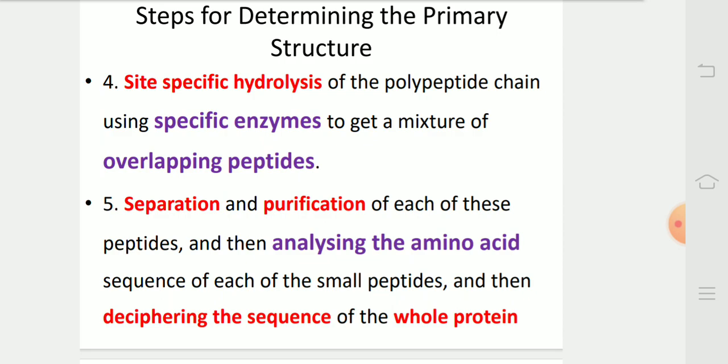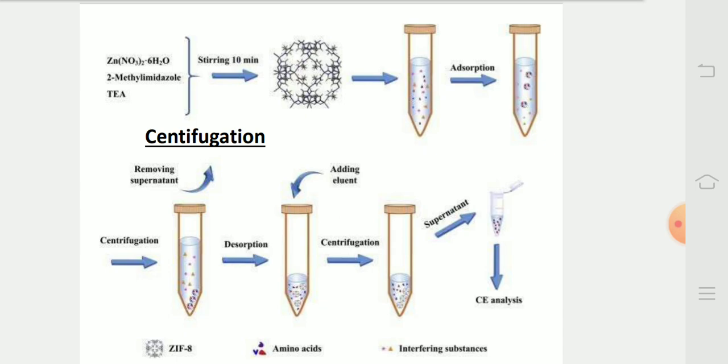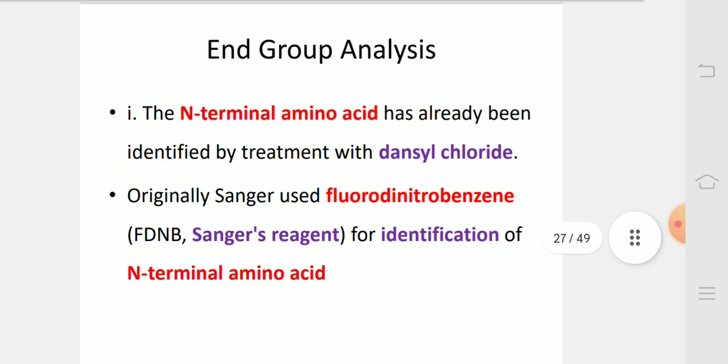Site-specific hydrolysis of polypeptide chain using specific enzymes to get a mixture of overlapping peptides. Separation and purification of each of these peptides and then analyzing the amino acid sequence of each of the small peptides. And then, deciphering the sequence of the whole protein. In this diagram, we can see centrifugation as a method of purification.